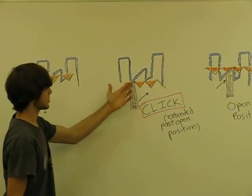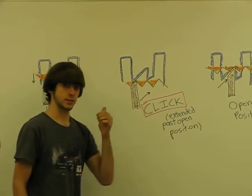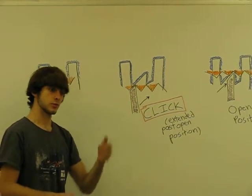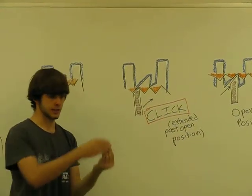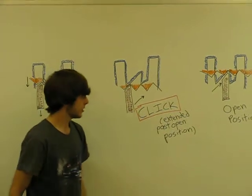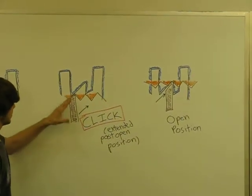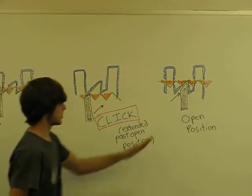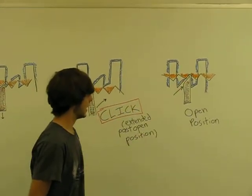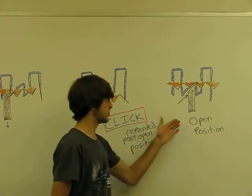So this will click into position here. And this is when your pen is actually extended past the open position. So if you had the handle all the way down, it's going to be past where it needs to be. And this is the open position. So what happens there is this follower is actually just going to go along this groove, and it's going to click into here. And this is going to be our open position.